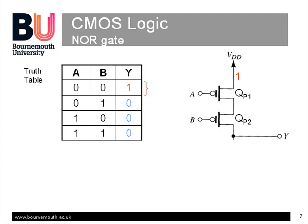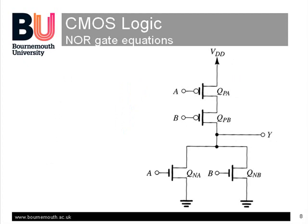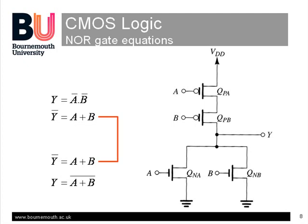The pull-down transistors are in parallel for the NOT OR function, while the pull-up transistors are in series for the A-NOT and B-NOT function. We can verify this operation using the Boolean equations for both networks. The pull-down has Y low, or NOT Y, for either A or B high. We can invert that to get NOT(A OR B), which is the required NOR function. The pull-up has inverted inputs for A and B so that Y equals NOT A AND NOT B, which we can rewrite as NOT Y equals A AND B — the same result as the pull-down — and which again translates into the overall NOR function.